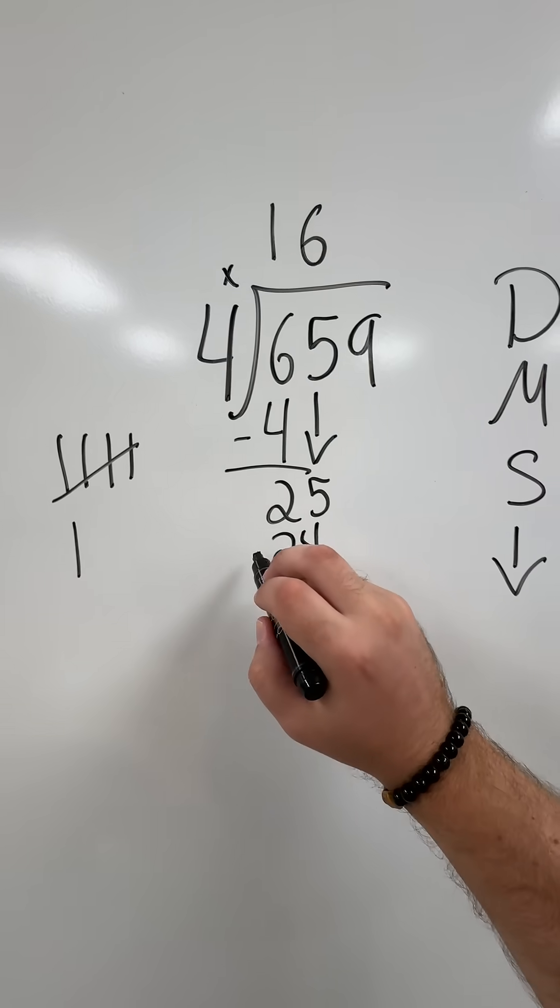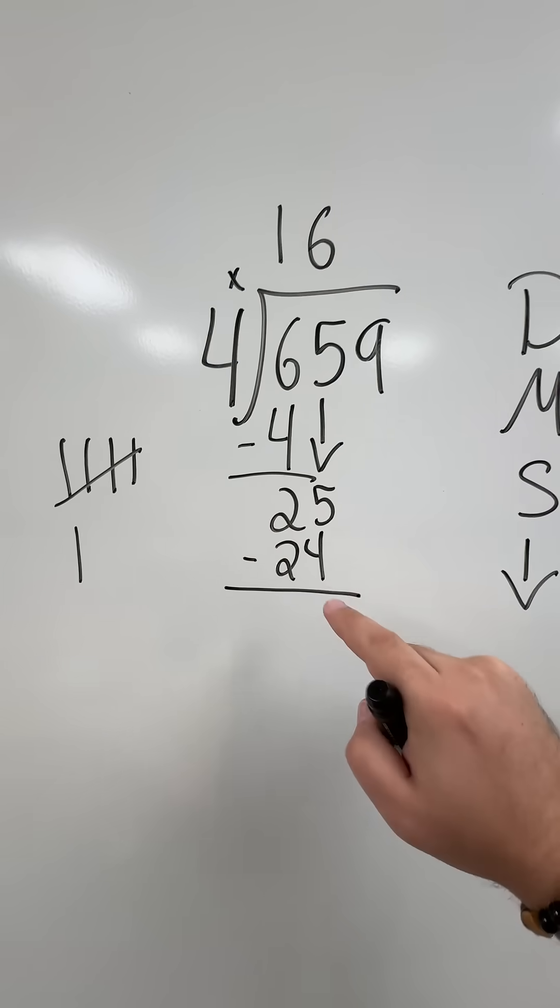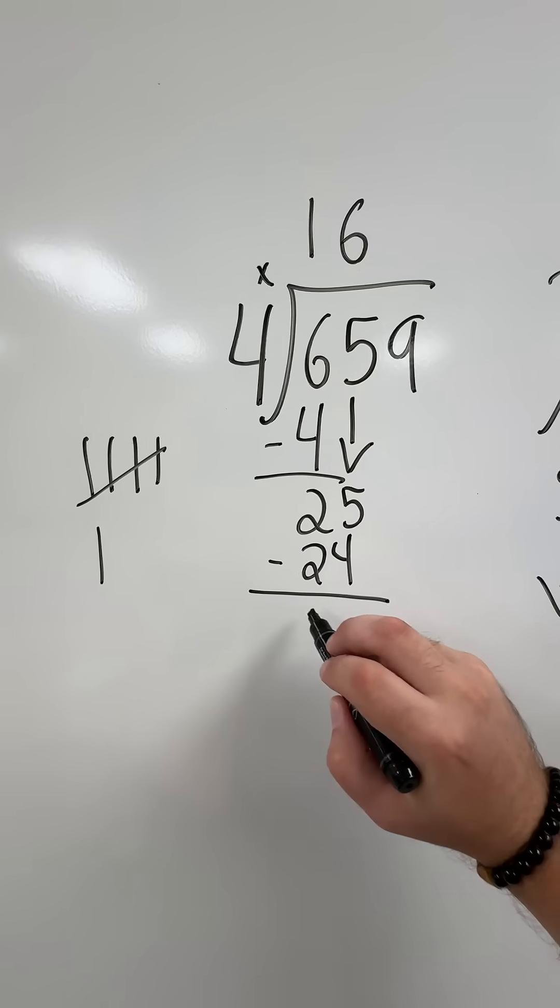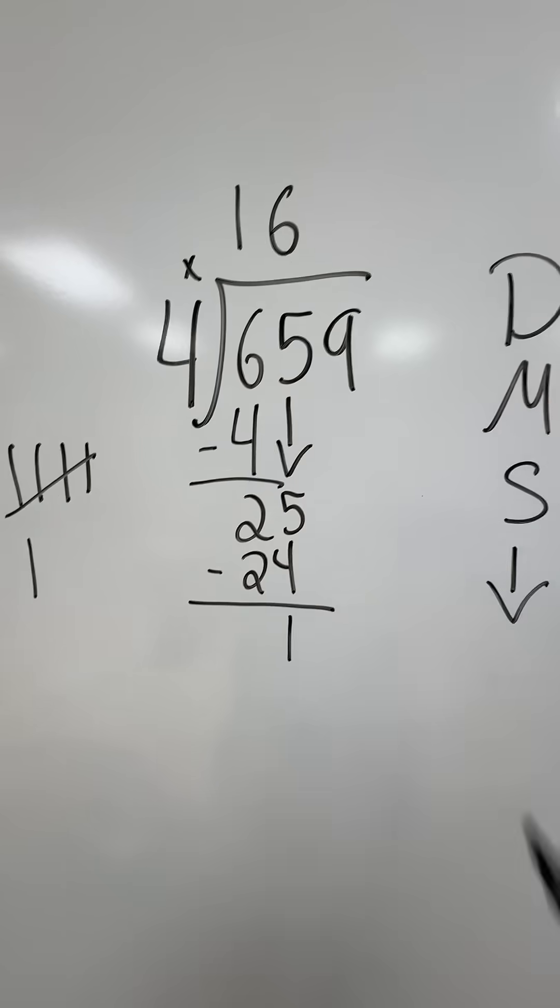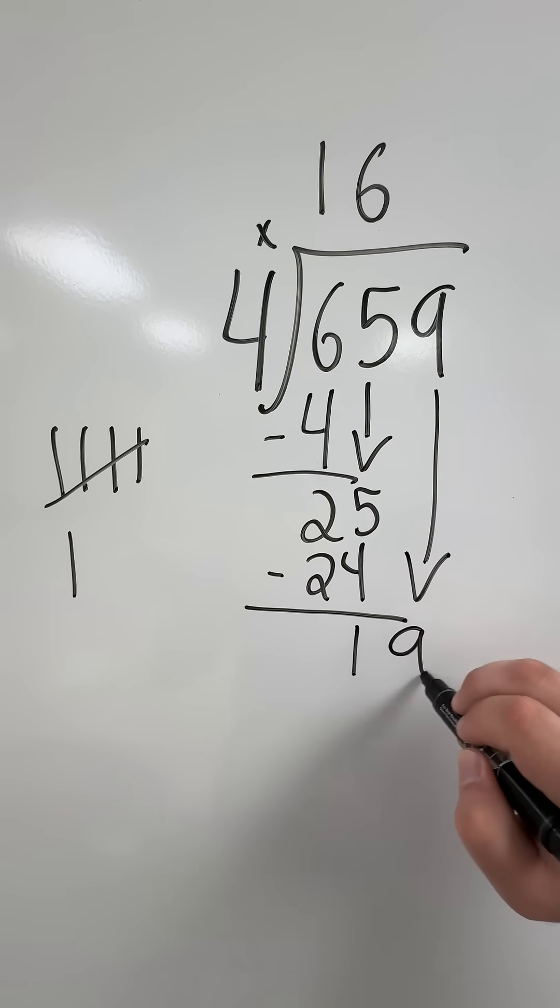My next step, subtract. 25 minus 24 is 1. Then I bring the 9 down. I'm working with 19.